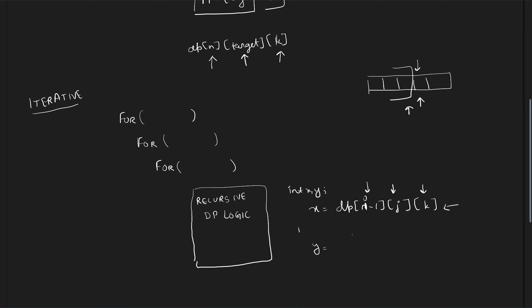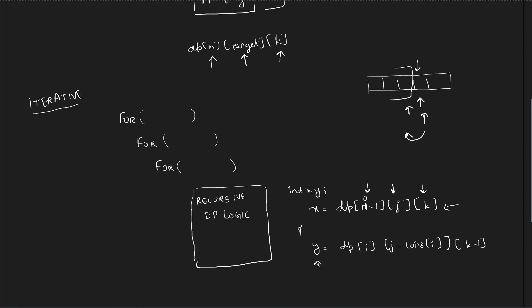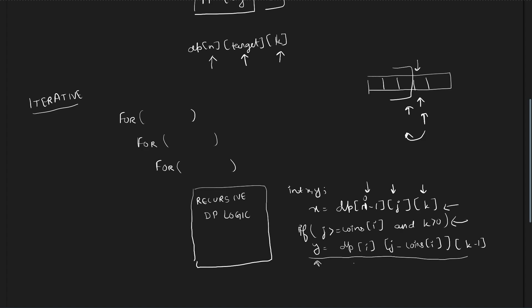Now there is the way when we choose the current coin. DP of i will remain as it is — if I'm choosing the current coin, I might also decide in the next move to choose the same coin again, so I don't move to the next position. My target will be subtracted by coins[i] and my number of coins will reduce by one. This is the second way. If I am choosing this way, I have to make sure that j is greater than or equal to coins[i] and k is greater than 0 — I can only make this operation if this condition is satisfied. This is what you would also do in the recursive part.